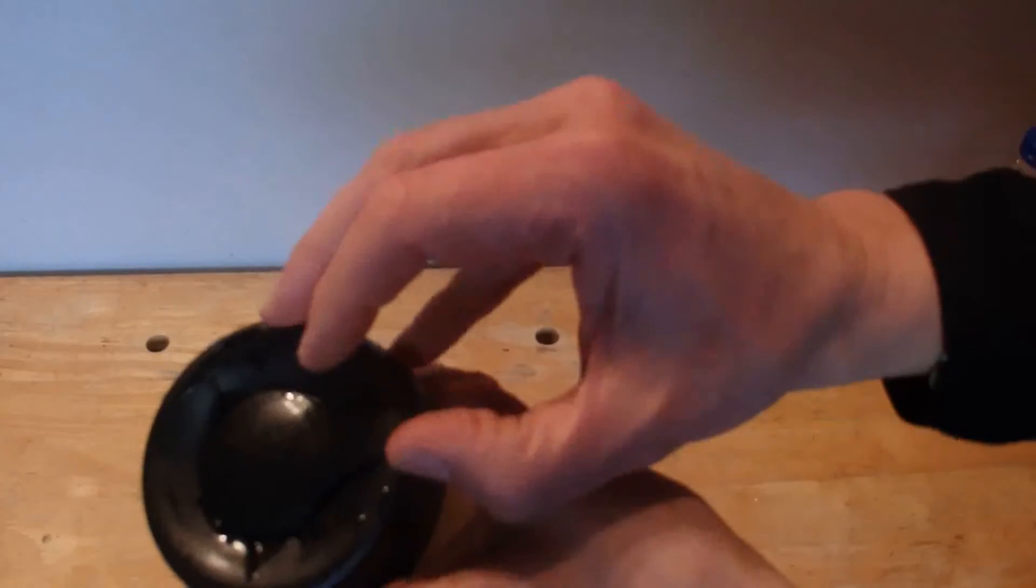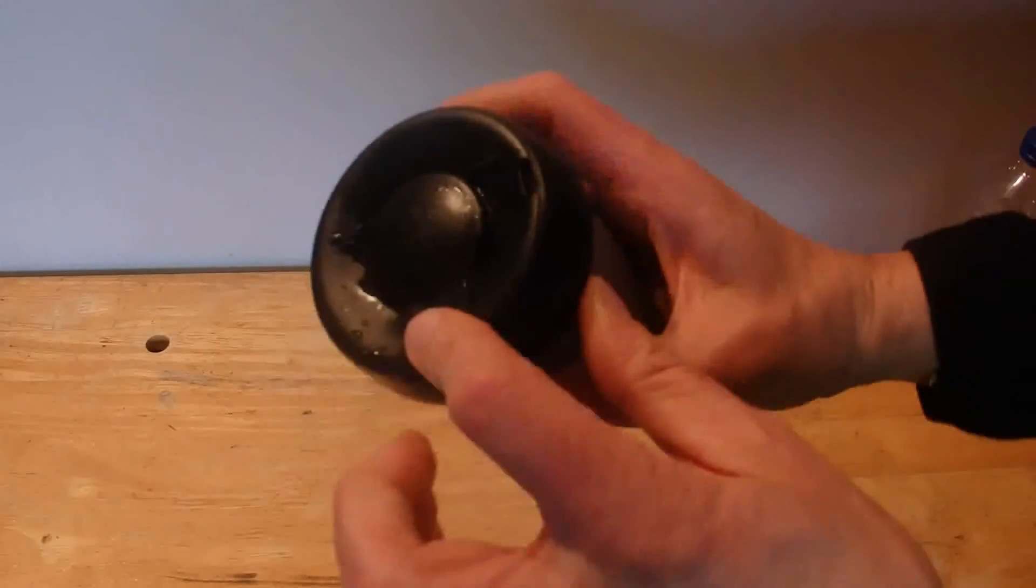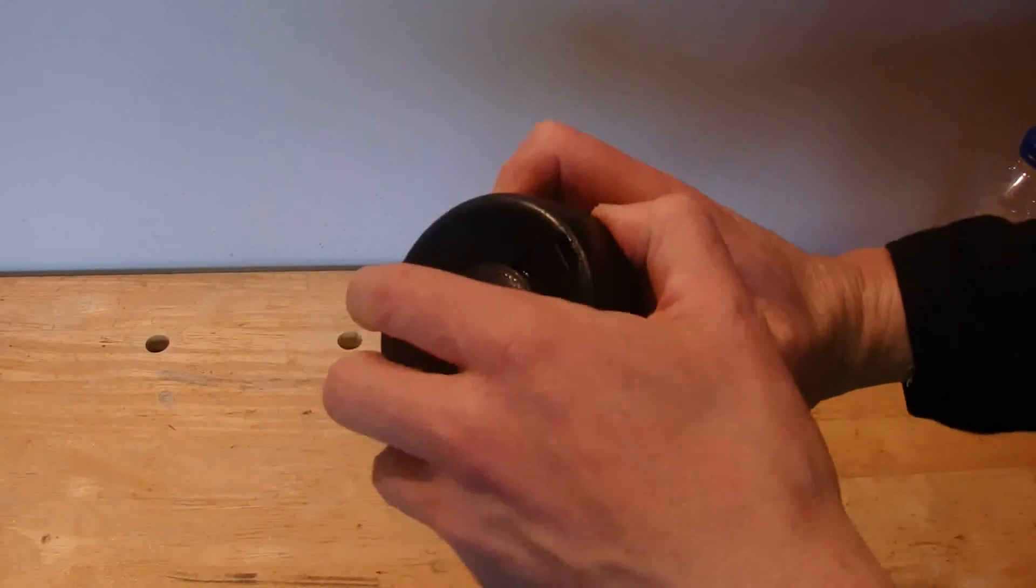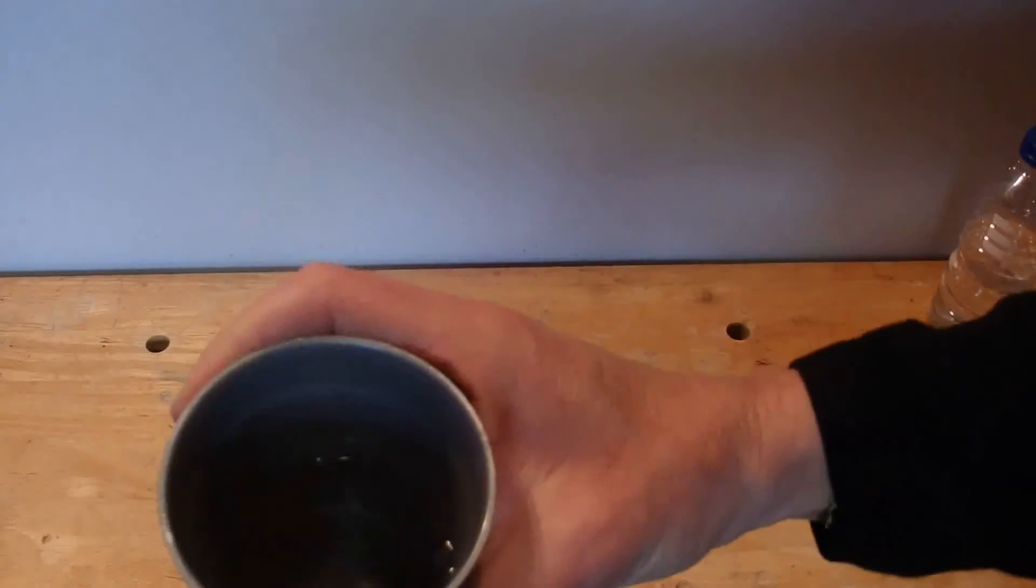So if we have a look at the lid there, I've got the little clip around in there blocking off the sipper part so not too much water comes out. Inside I've got it with cold water, just over halfway full of cold water.